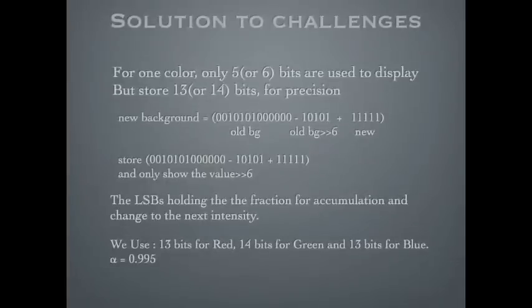Our solution is that, for example, for red color it only has 5 bits. But instead of storing only these 5 bits, we store all the certain bits before the division, so that no precision is lost. And when we transfer the value to the monitor, we only transfer the upper 5 bits — the MSB — to the monitor. So after all, it is the concept of using range to exchange for precision.